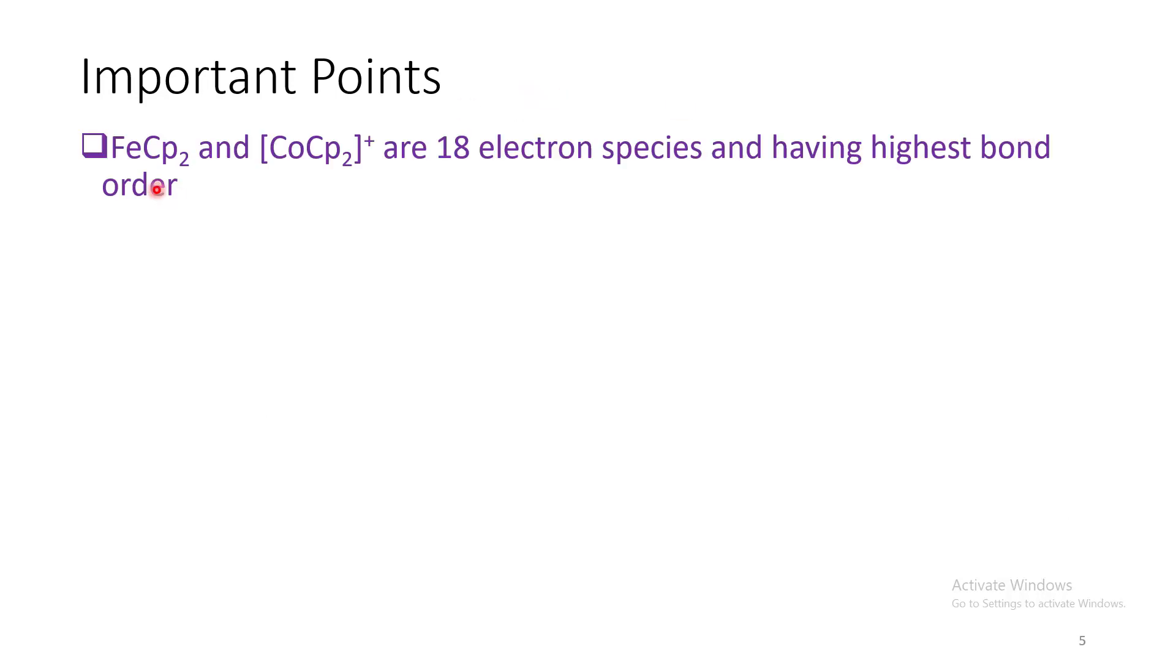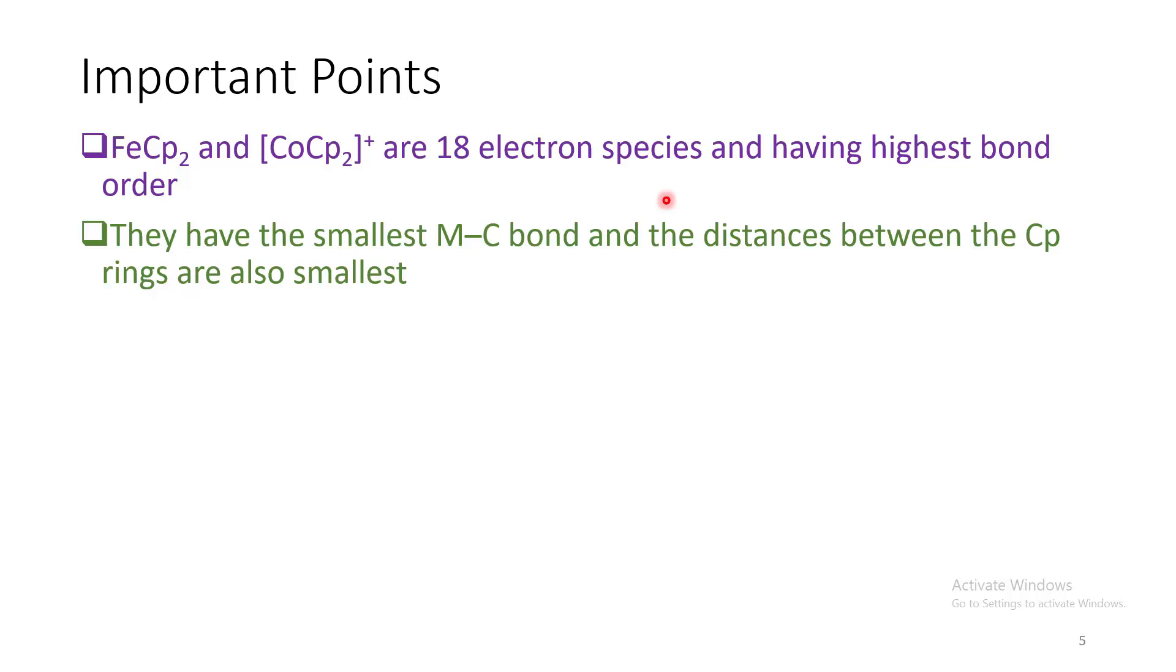If we look carefully, this iron and this cobalt complex are 18 electron species. All the bonding and non-bonding orbitals are occupied and the anti-bonding orbitals are vacant. As a result, they are having the highest bond order. So the metal-carbon bond is the shortest, resulting the shortest distance between the Cp rings.